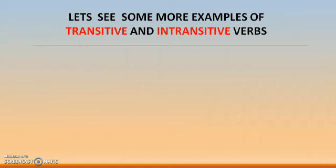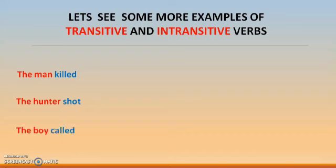Let's see more examples of transitive and intransitive verbs. 'The man killed' — not a complete sentence. 'The hunter shot' — not complete. 'The boy called' — not complete. The man killed whom? The hunter shot whom? The boy called whom? Verb is there, subject is there, but object is not there — these sentences need an object.